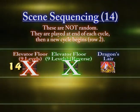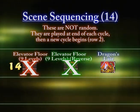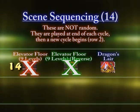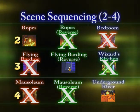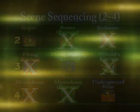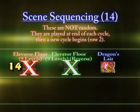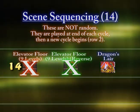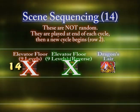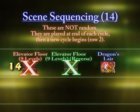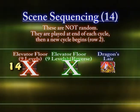On the second cycle, it does not do anything random on row fourteen — it will always play elevator floor nine levels reverse, playing it over and over until you finish it. On the other scenes, if you get killed, it goes on to the next row, but not here on row fourteen. Then it goes all the way back up to row two for the third cycle and does the one scene not played before. Right before it plays Dragon's Lair, it queues up all the scenes you got killed on that you didn't finish, playing them one at a time until you complete them. For example, if you didn't finish flying barding, it plays flying barding over and over before Dragon's Lair until you finish it.